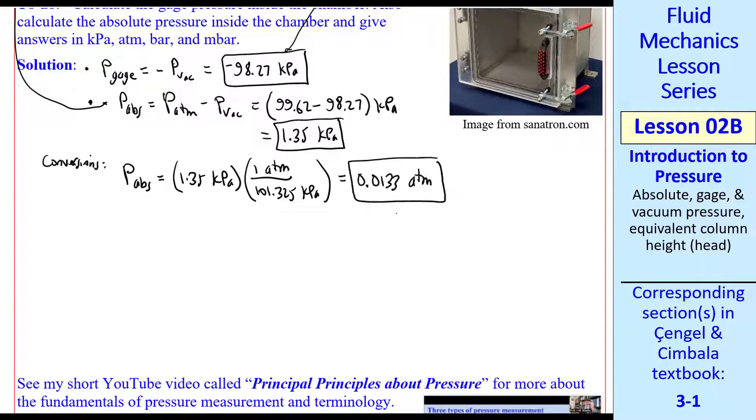Unit conversions are similar to what we did in the previous example. P abs is 1.35 kPa times a unity conversion factor, giving us 0.0133 atmospheres. We do the same for bars, and we get a similar answer, 0.0135 bar. Let's multiply by another conversion factor, namely 1,000 millibar per bar. Since this is such a small number, low vacuum pressures like this are often given in terms of millibars.